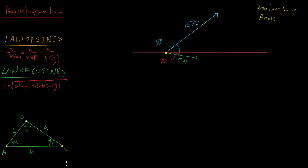I've drawn a triangle here — triangle ABC — where capital A, capital B, and capital C are the vertices. Lowercase a, lowercase b, and lowercase c are the lengths of the sides of the triangle, and they are across from the vertices. So capital A is across from lowercase a. The angles are in Greek: alpha, beta, and gamma. Alpha goes with a, beta goes with b, and gamma goes with c.